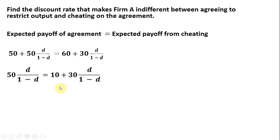Let's just solve for D. So the first thing I do is I subtract 50 from both sides, so that's where this 10 is coming from. The next thing I do is I multiply both sides through by 1 minus D. So that'll just leave us with 50D on the left-hand side. And then also multiplying the right-hand side through by 1 minus D will have just 30D, and then 10 multiplied by 1 minus D.